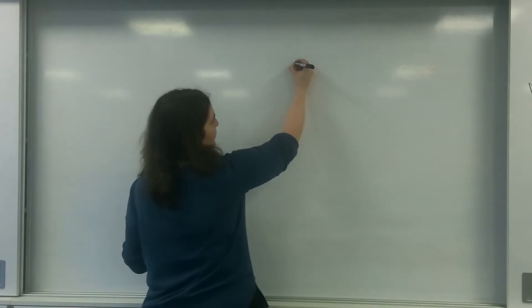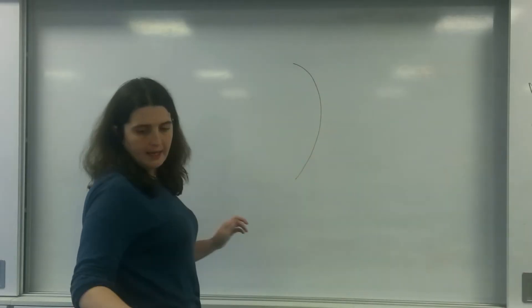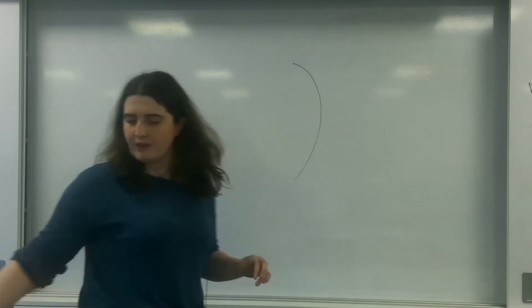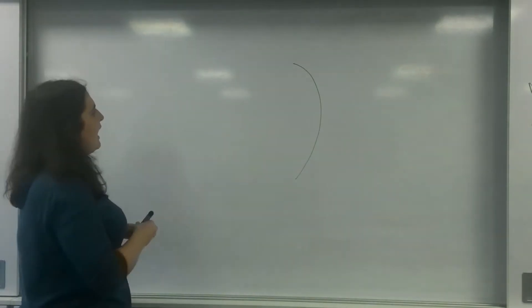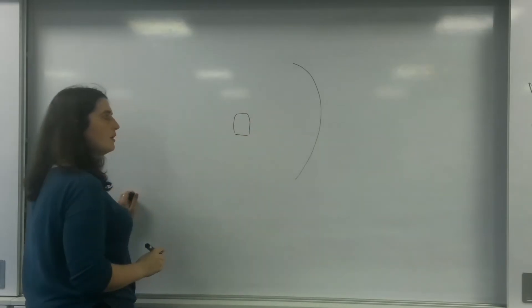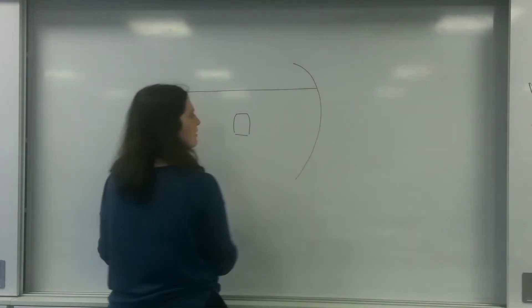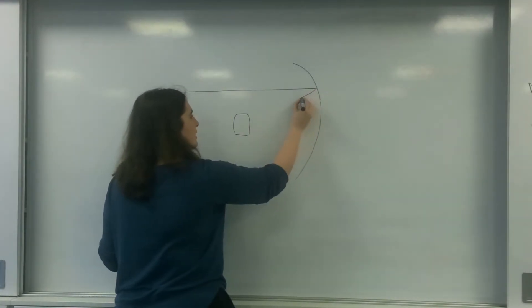A cassegrain system runs on the idea that you have a mirror here, and you have a mirror here as well.